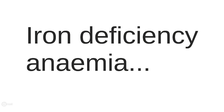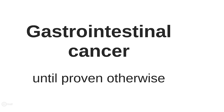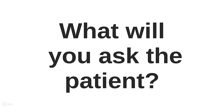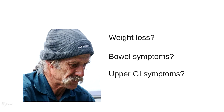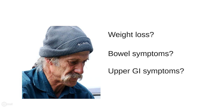He has iron deficiency anaemia. What's the most important cause of iron deficiency anaemia in a patient of this age? A gastrointestinal cancer. You call the patient and ask him to come back to see you in the clinic. What further questions are you going to ask him? Weight loss, bowel symptoms such as bleeding and an alteration in bowel habit, and upper GI symptoms which would include things like heartburn, dyspepsia, epigastric pain, and dysphagia.